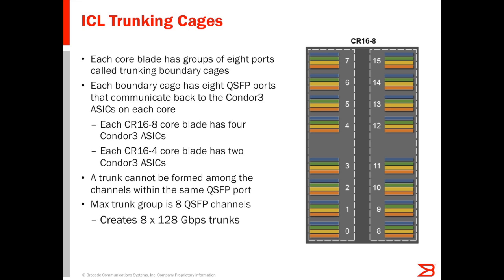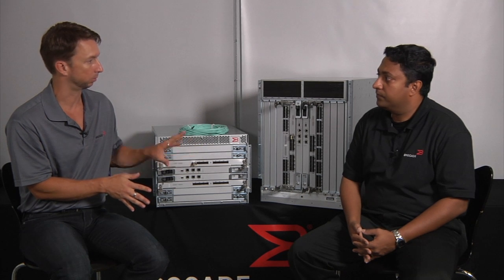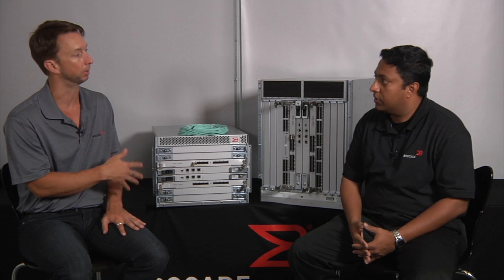For example, the CR16-8 on the eight-slot chassis has four Condor 3 ASICs, and the CR16-4 on the four-slot chassis has two Condor 3 ASICs. The eight-slot core blade has two of these eight-port boundary cage groups per core blade, for a total of four. On the four-slot box, there is only one boundary cage group on each core blade, for a total of two.